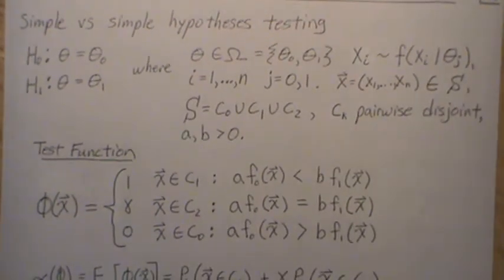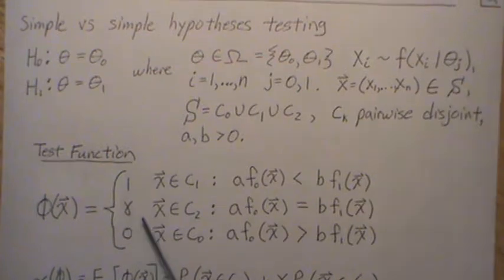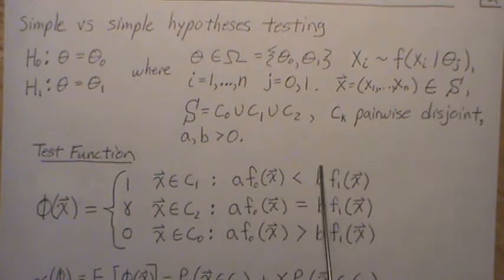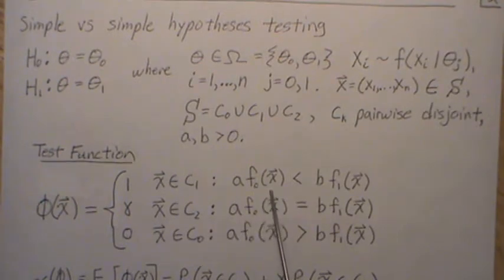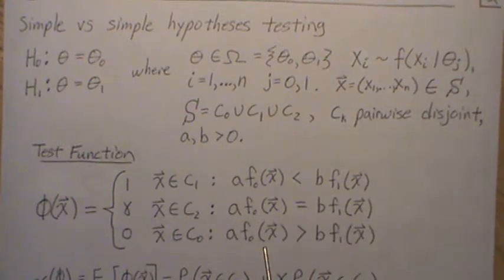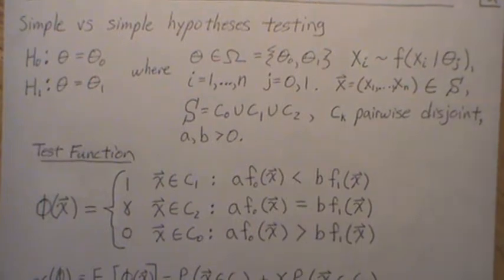This is our test function. It takes on the values 1, gamma, and 0. It takes on a 1 if X is in region C1, which we're going to make equivalent to this: a times the joint density under the null hypothesis is less than b times the joint density. I'm saying density but probably should say probability mass function for X under the alternative. It's gamma when they're equal and zero when this left piece is greater than the right piece.